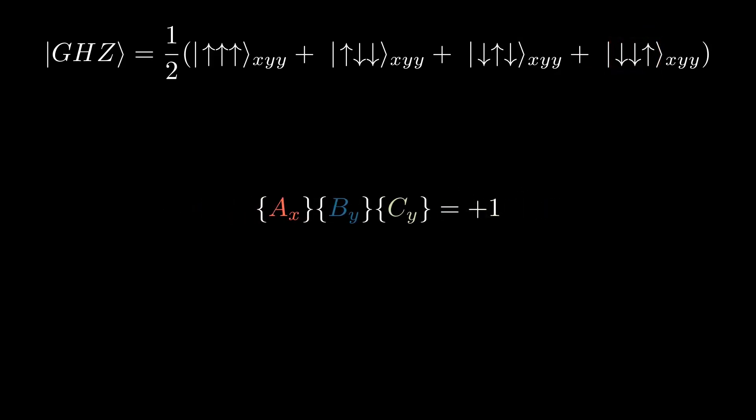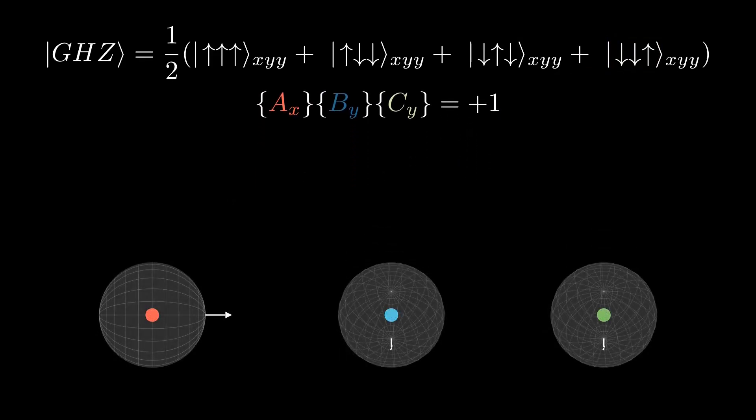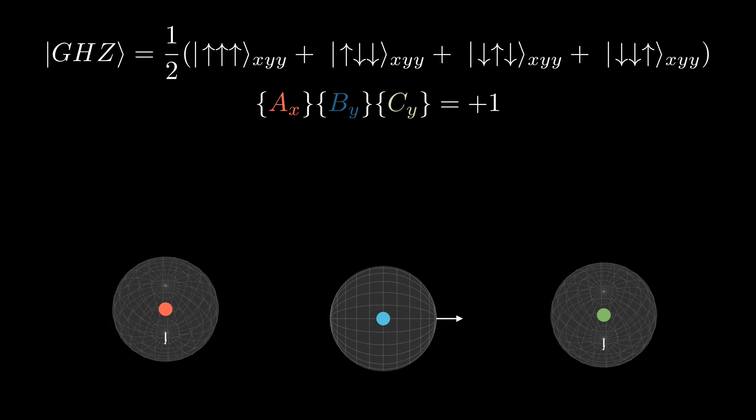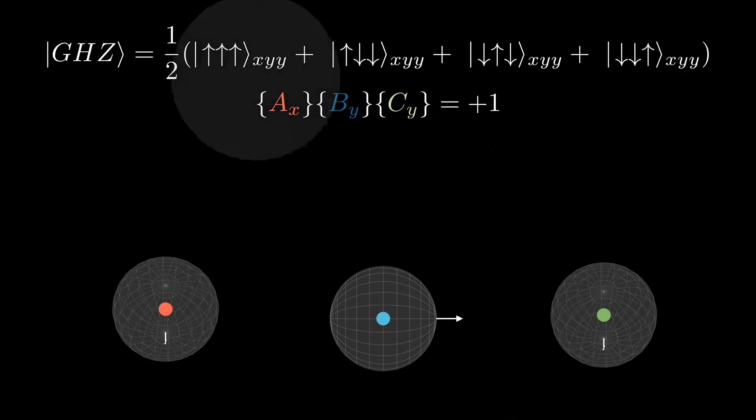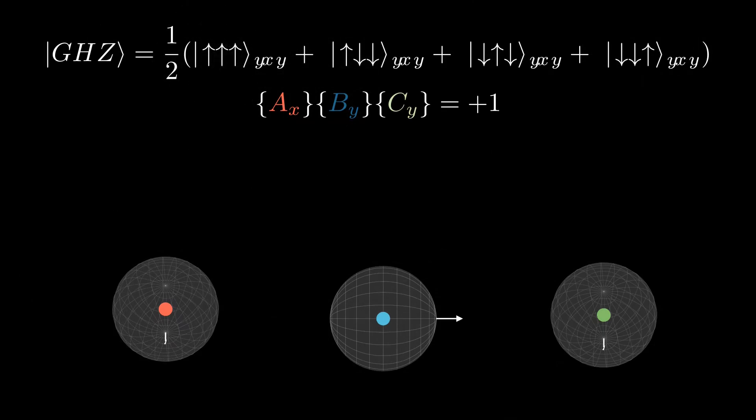For our third equation, we're going to measure particle B in the X direction and the other two in the Y. But we don't need to repeat our mathematics here because A and B are completely symmetric and therefore they are going to deflect in the same way. So here we get AY times BX times CY is also equal to plus one.